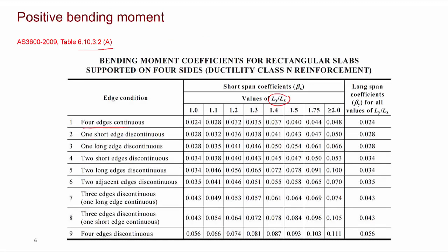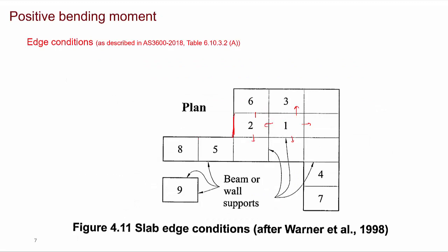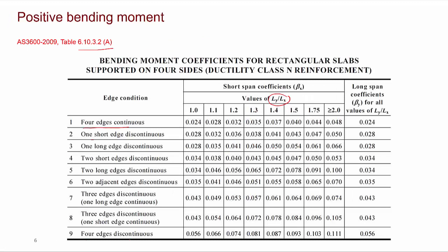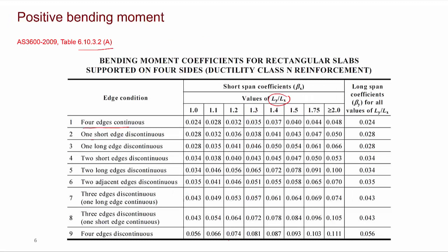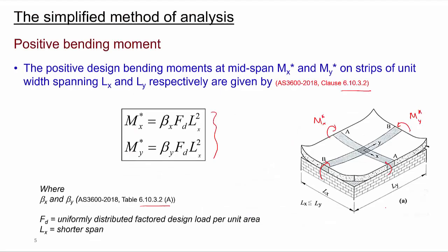Similarly, beta y depends on Ly over Lx and can be found from the same table. Once beta x and beta y are found, substitute the values into the equation given by clause 6.10.3.2 to find the maximum positive bending moment in x and y directions per unit width of the span in Lx and Ly directions. Then, the area of reinforcement for that maximum moment can be found exactly like for one-way slab, considering a one-meter-long span, to estimate the area of reinforcement required in both x and y directions.